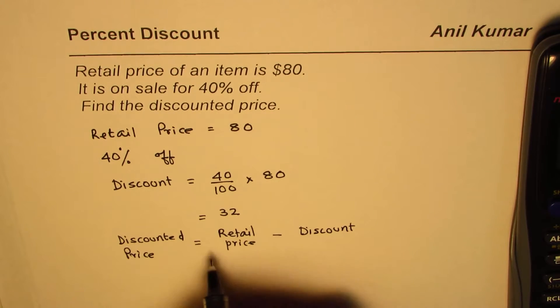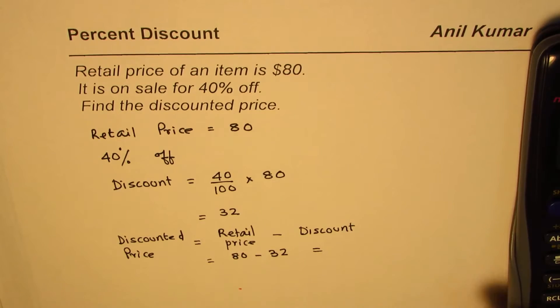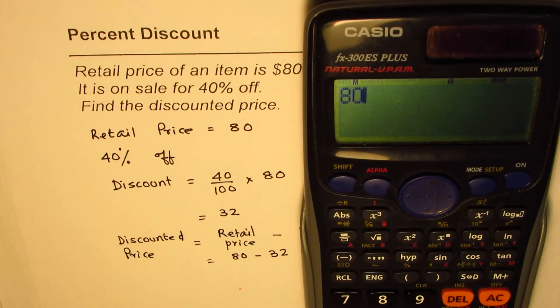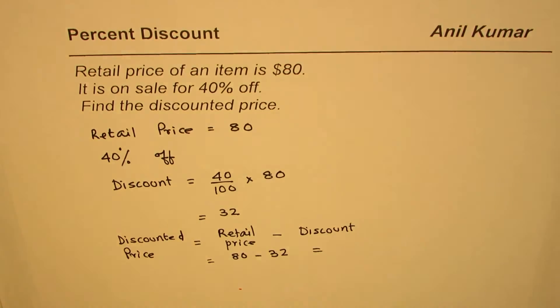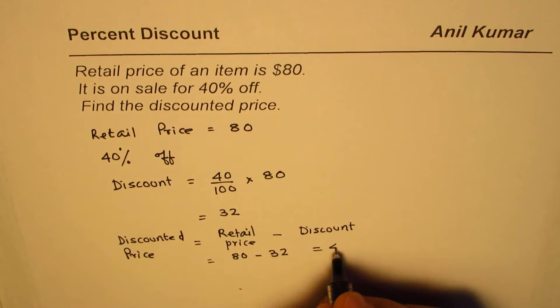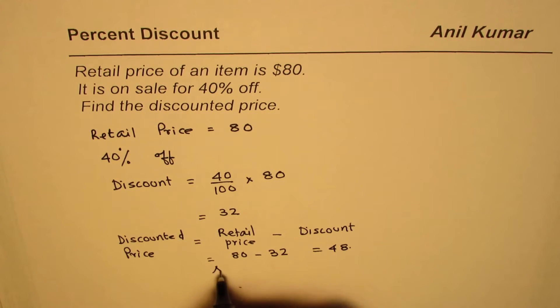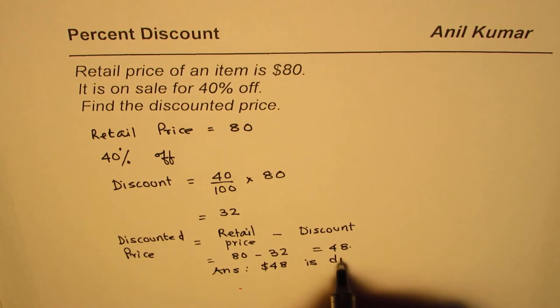For us, retail is 80. So 80 take away 32, that gives us the value. Let's use calculator: 80 take away 32 equals 48. So we get $48, and therefore the answer is $48 is the discounted price.